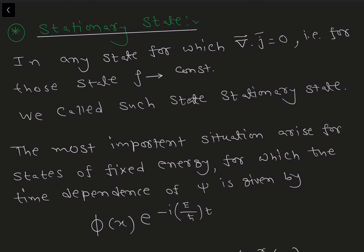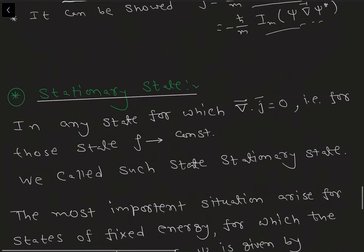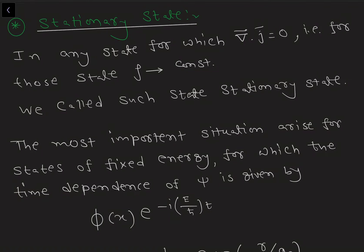Now let me introduce a little bit about stationary states. In a future video we are going to discuss stationary states and superposition of states in detail. For now, let us have a basic introduction. For any state for which the divergence of J becomes zero, we can say that rho is constant — that is, the probability density is constant — because del rho/del t equals minus divergence of J. So if divergence of J equals zero, then del rho/del t equals zero, which implies rho is constant.